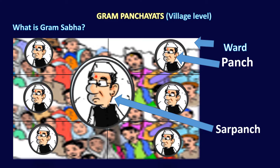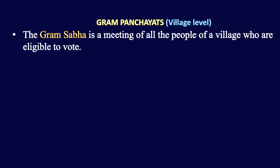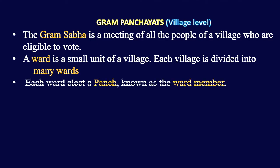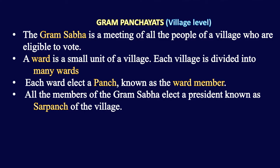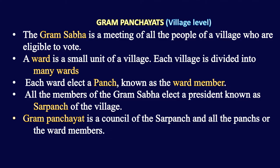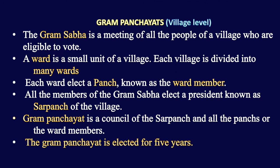To recap: Gram Sabha is the meeting of all the people of a village who are eligible to vote. Each village is divided into many wards; each ward elects a Panch or ward member. All members of the Gram Sabha elect a Sarpanch as president. The Gram Panchayat is a council of the Sarpanch and all the Panchs. The Gram Panchayat is elected for five years; after five years, elections are held again and new members are elected.